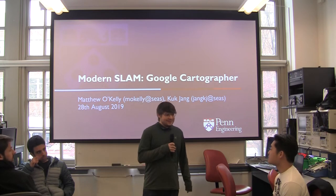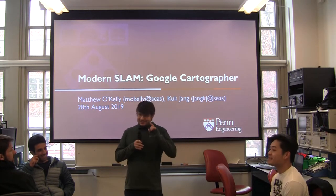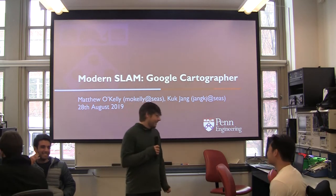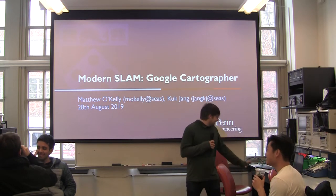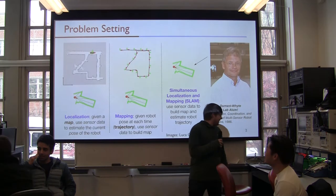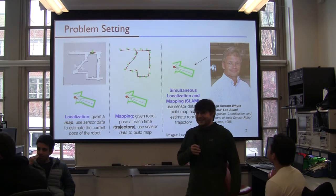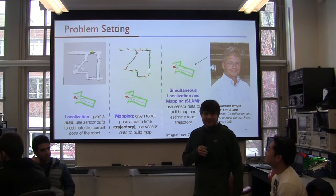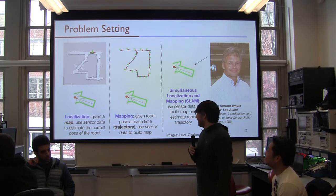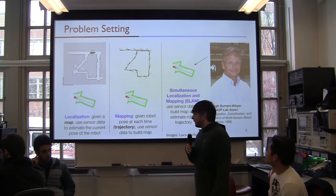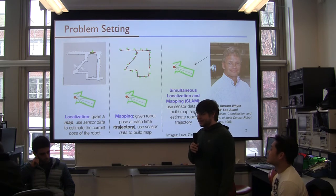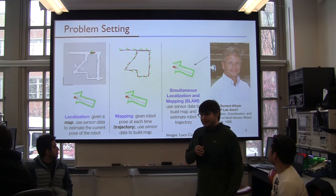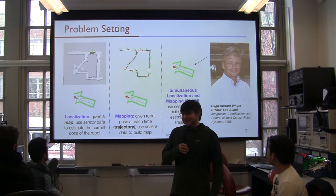Well, it's a system localization effect. Simultaneous. So, the problem setting that we're interested in is simultaneous localization and mapping. This has been a pretty well-studied problem. It was first posed in maybe the early 80s by Hugh Durrant-Whyte. Grasp Lab is related. So you're in the right place to try out these algorithms.